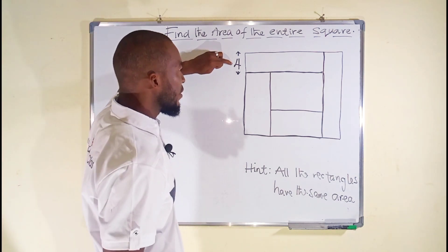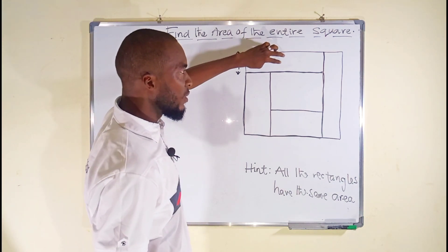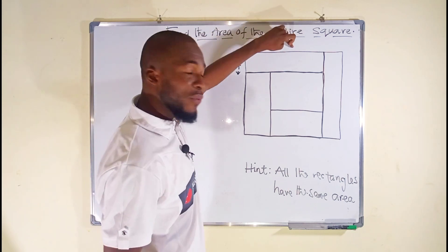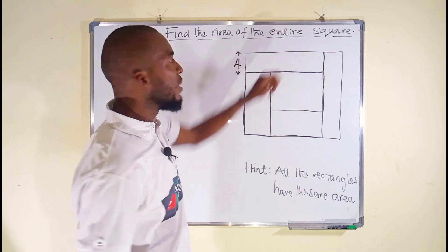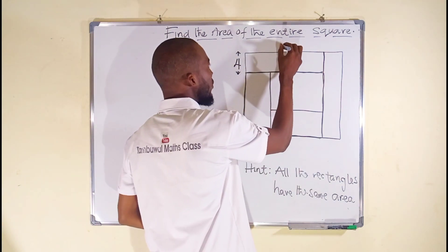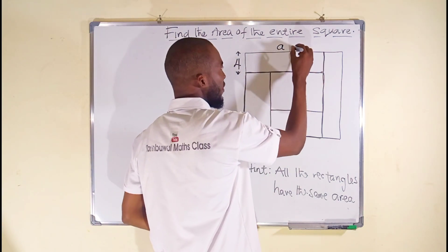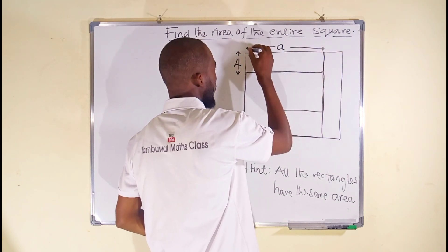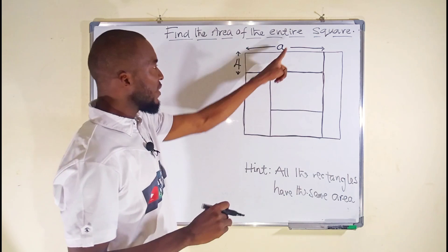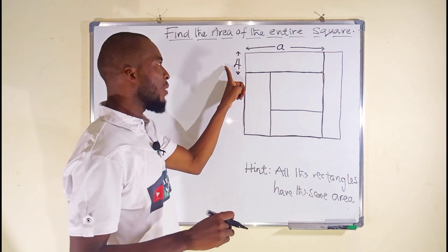Since we are given the width of this rectangle, we know if its length is given we can just multiply the length and the width to get the area of that rectangle. So since it is unknown, let us consider it as a, from this point to this point. So if this is the length a multiplied by 4 will give us the area, 4 times a is 4a.